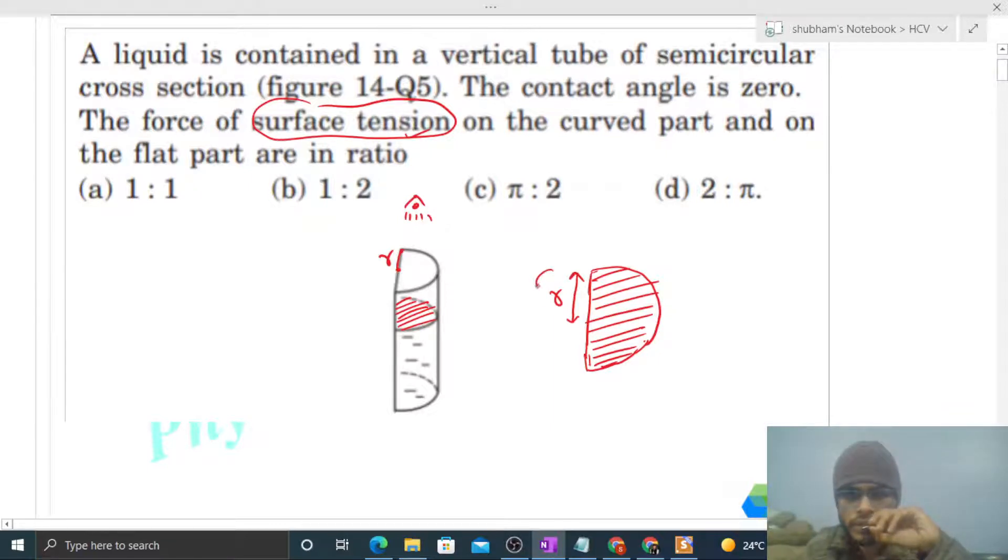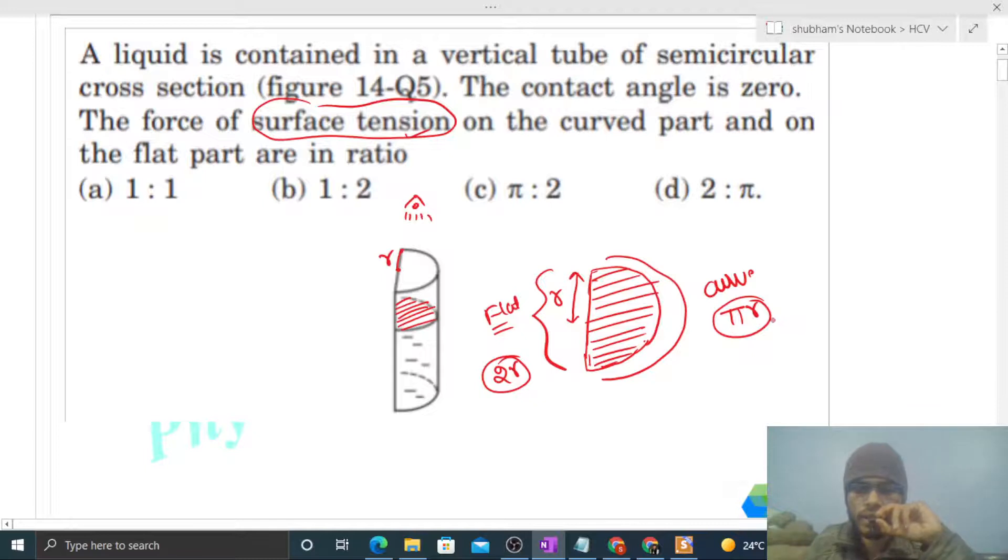Now which is the flat part? This is your flat part and this is your curved part, right? So what will be the length of the flat part? That will be 2r, the diameter. And the curved part's length will be πr, which is the perimeter of the semicircle, that is πr.